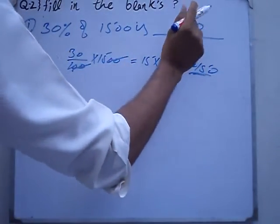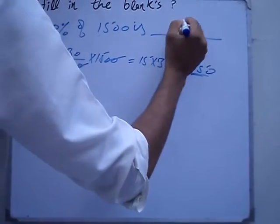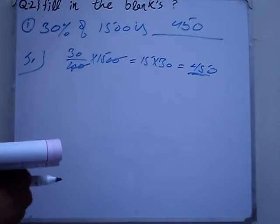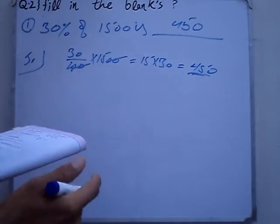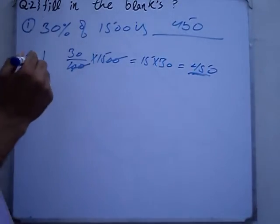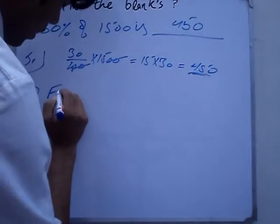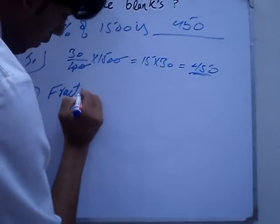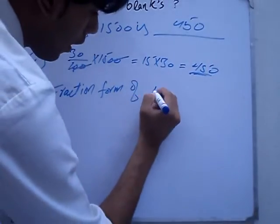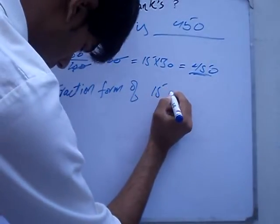Directly, 450. For example, fill in the blanks part 2: Fraction form of 15%. What is the fraction form of 15%?